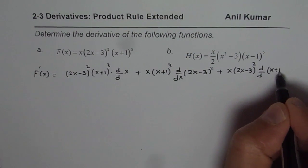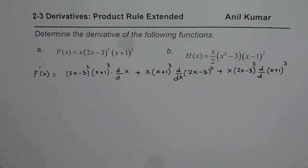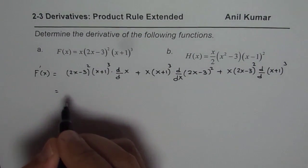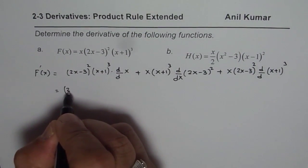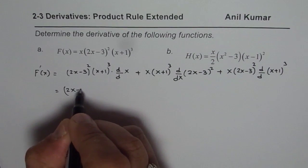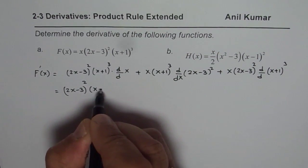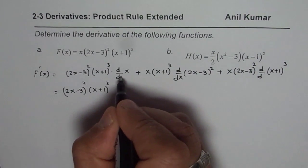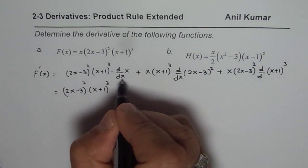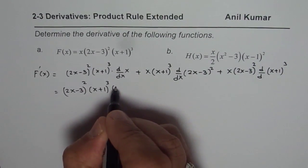So that is how the product rule formula can be extended — you can have any number of factors. So what we have here is (2x minus 3) squared times x times (x plus 1) cubed. The derivative of x with respect to x is 1, so it is just 1.